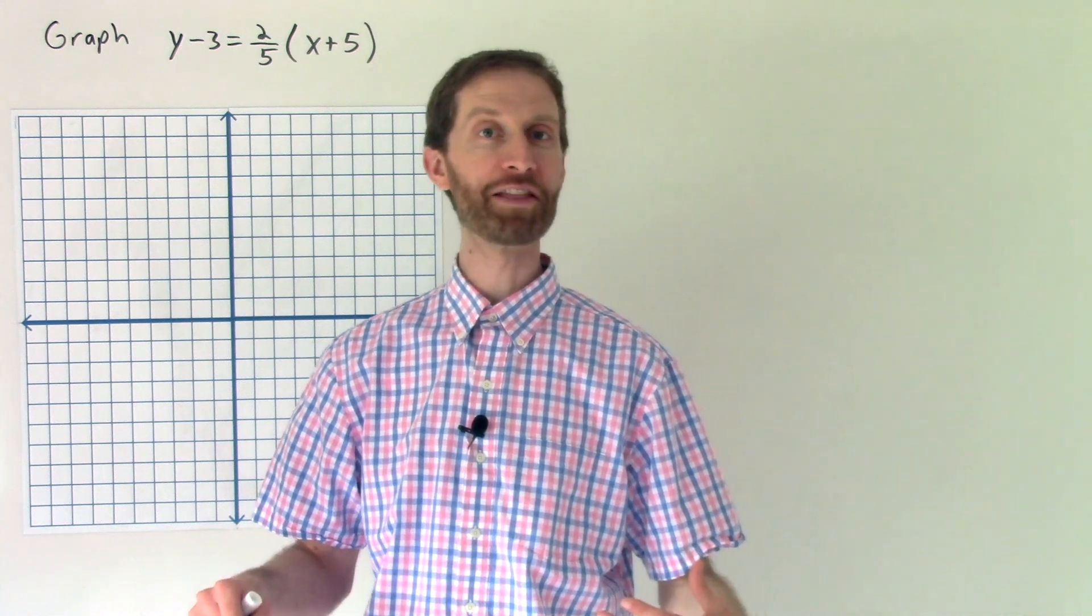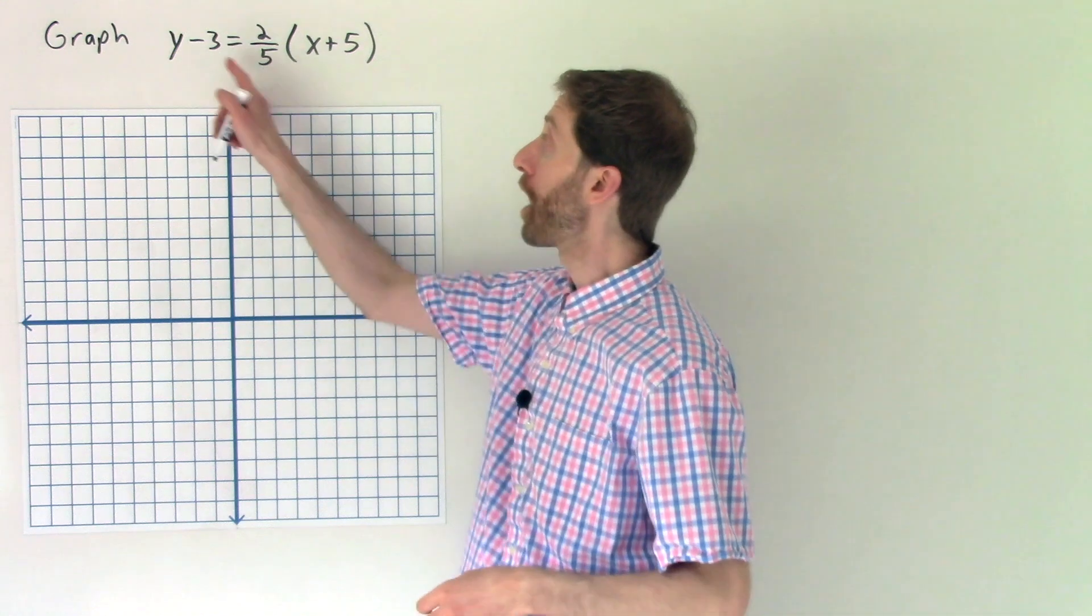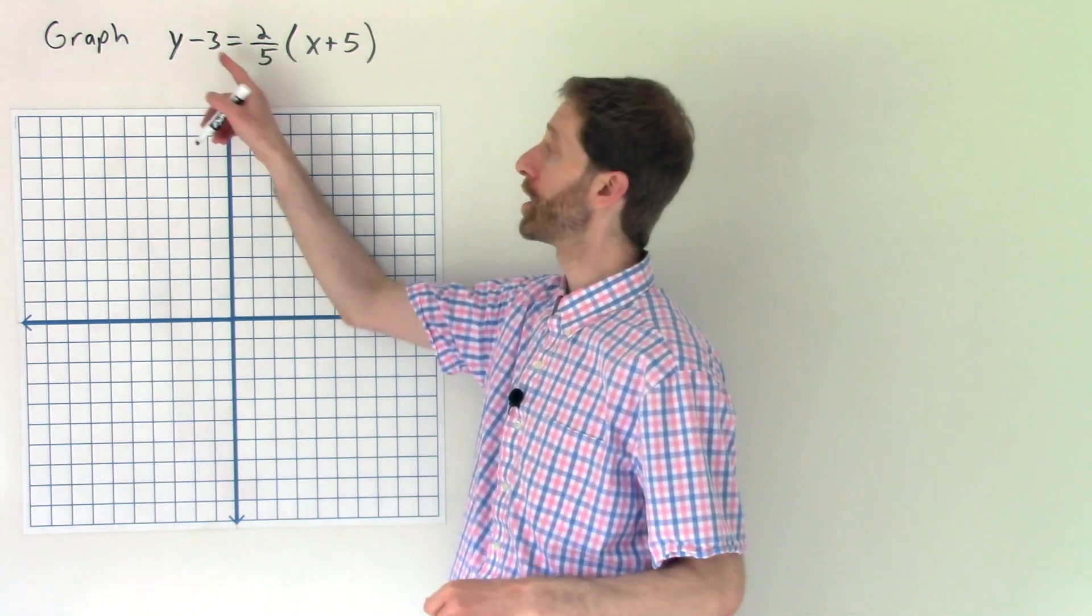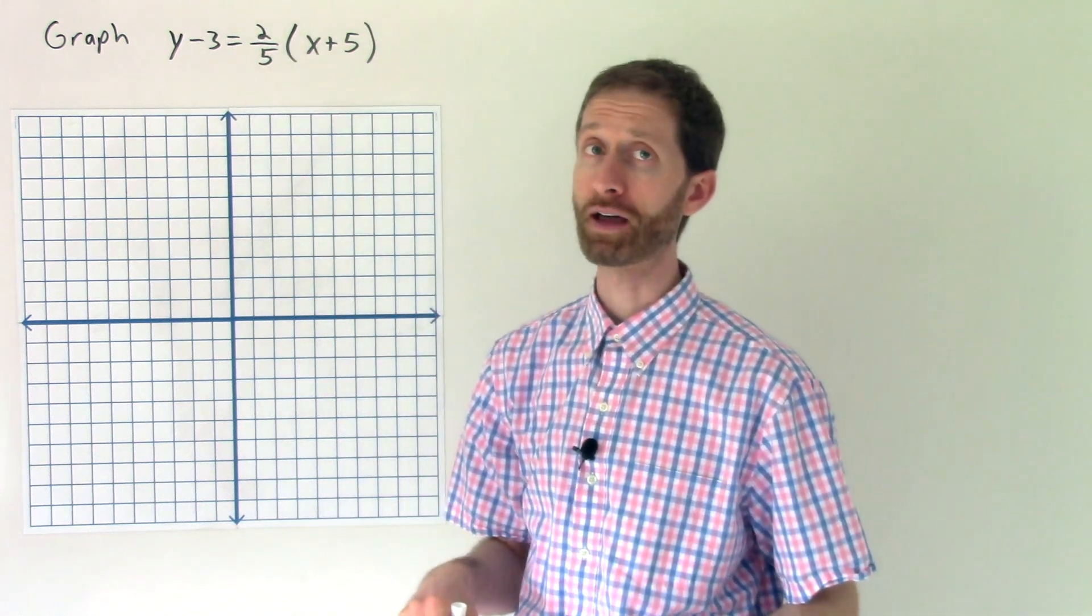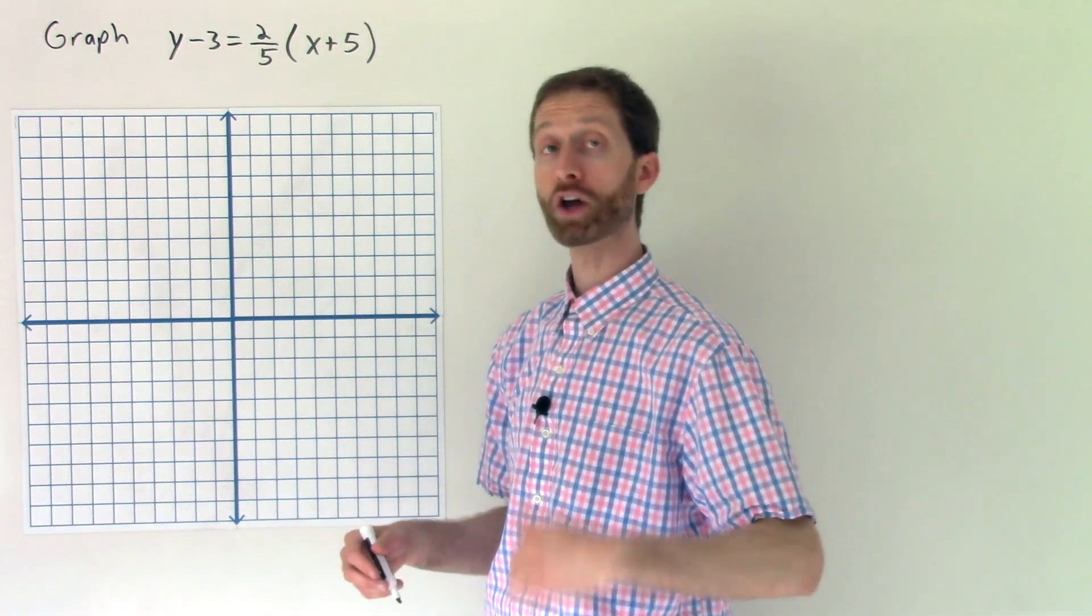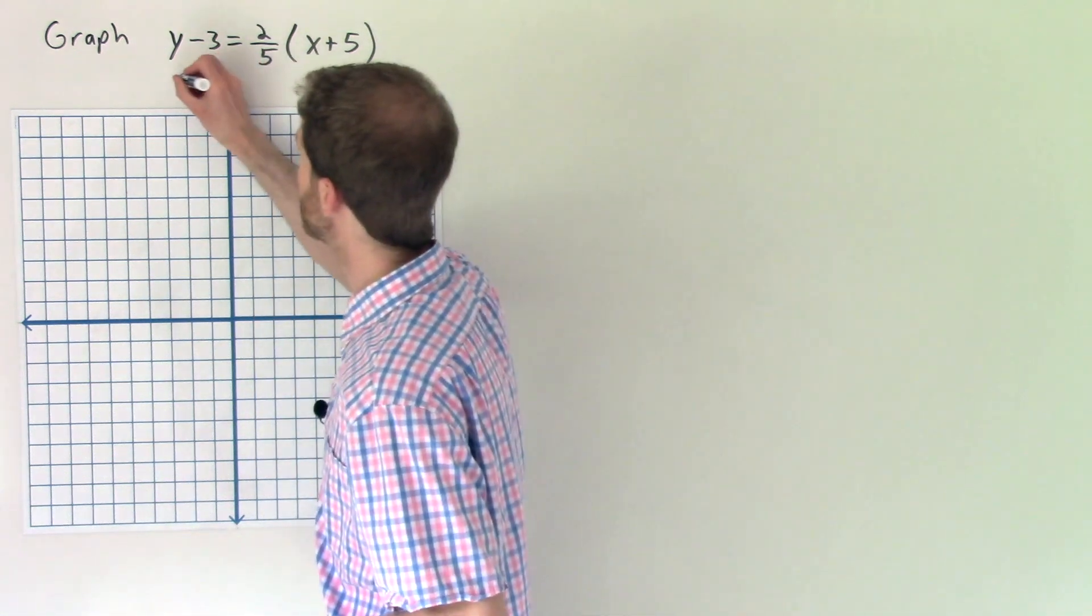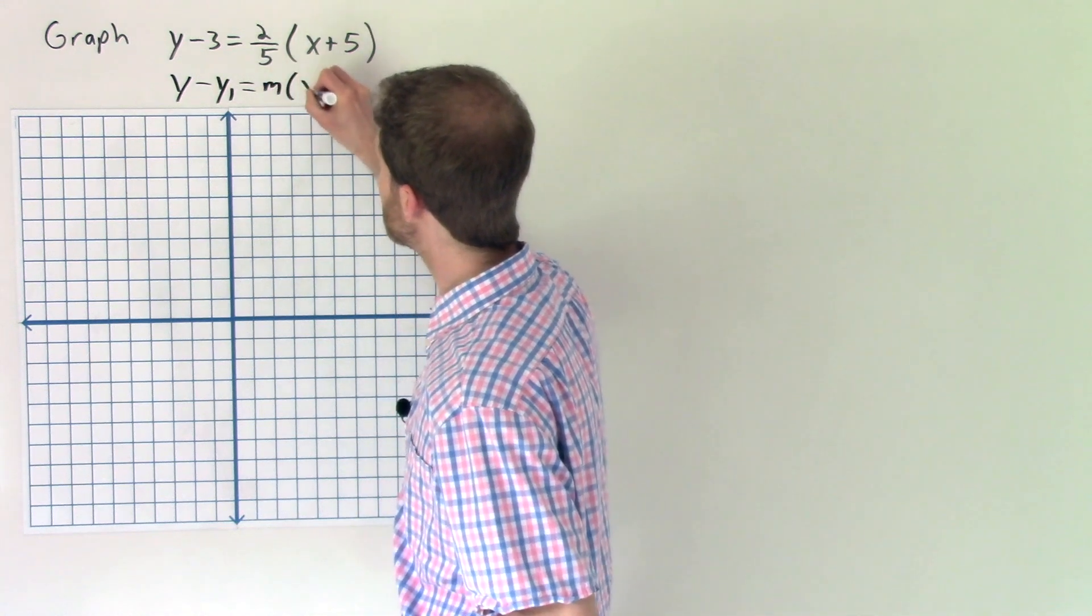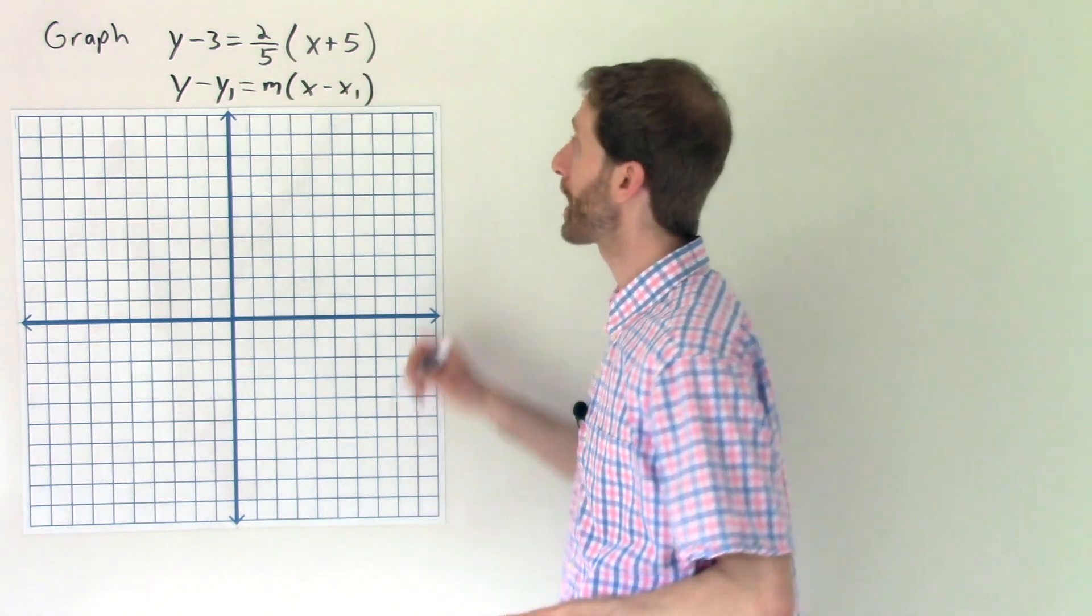And here we are on the other side of the video. As promised, about to do a second example for how to graph a point-slope form of the equation of a line. So we're given the equation y minus 3 equals 2 fifths times the quantity x plus 5. As we did in the first half of the video, I'd like to identify the information we have based on understanding the main template for point-slope form. And that main template again is y minus y₁ equals the slope times x minus x₁.